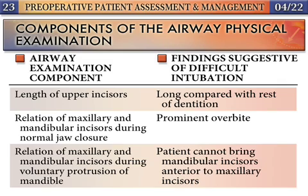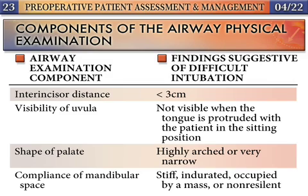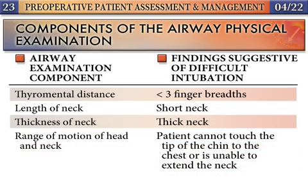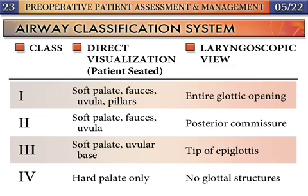Evaluation of the airway involves determination of the thyromental distance, the ability to flex the base of the neck and extend the head, and examination of the oral cavity, including dentition. The Mallampati classification has become the standard for assessing the relationship of tongue size relative to the oral cavity, although by itself, the Mallampati classification has a low positive predictive value in identifying patients who are difficult to intubate.